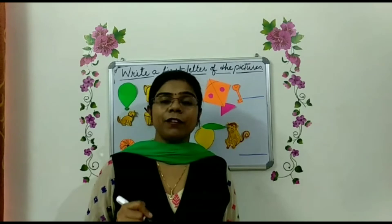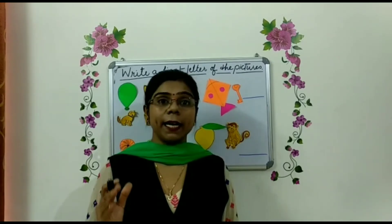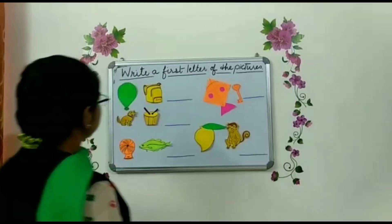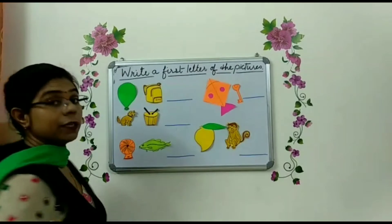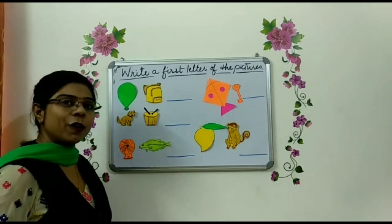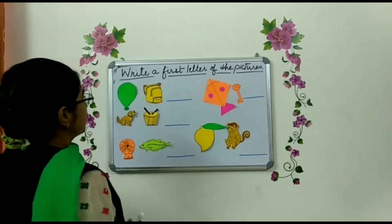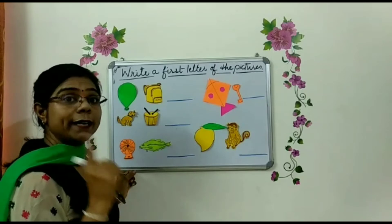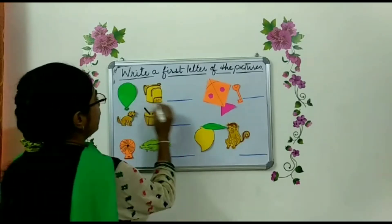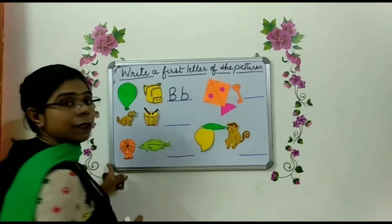Now tell me, what is this? Very good. This is B for balloon. And this is B for bag. So now what we have to do? We have to write the first letter of the picture. First letter is B for balloon and B for bag. Right?